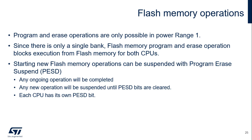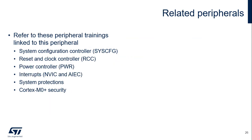Flash memory program and erase operations are only possible in Power Range 1. In Range 2 and low power modes, flash memory program and erase operations are prohibited. Due to the single bank flash memory architecture, program and erase operations will block execution for both CPUs. To prevent flash memory operations from impacting real-time CPU performance, they can be suspended. As long as the suspend is active, no new operations will be started, guaranteeing execution can continue. If an ongoing flash operation was enabled before the suspend, it will be completed. Each CPU can request a flash operation suspend using its own suspend register bit.